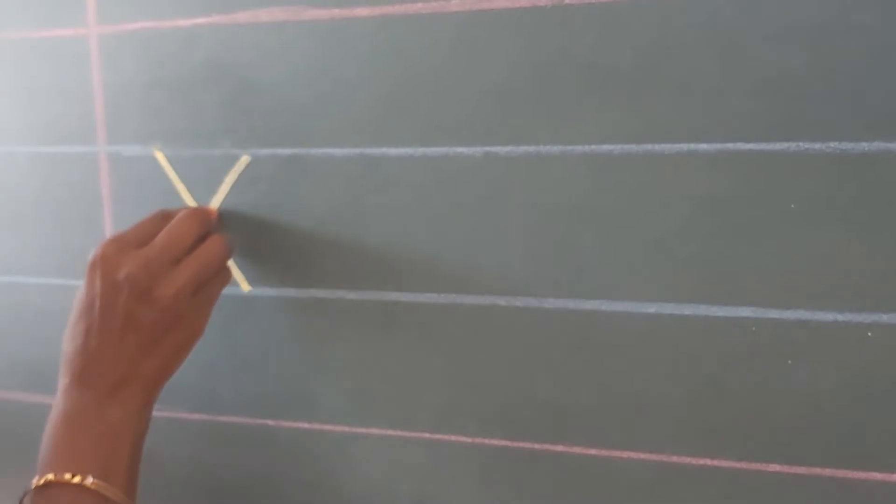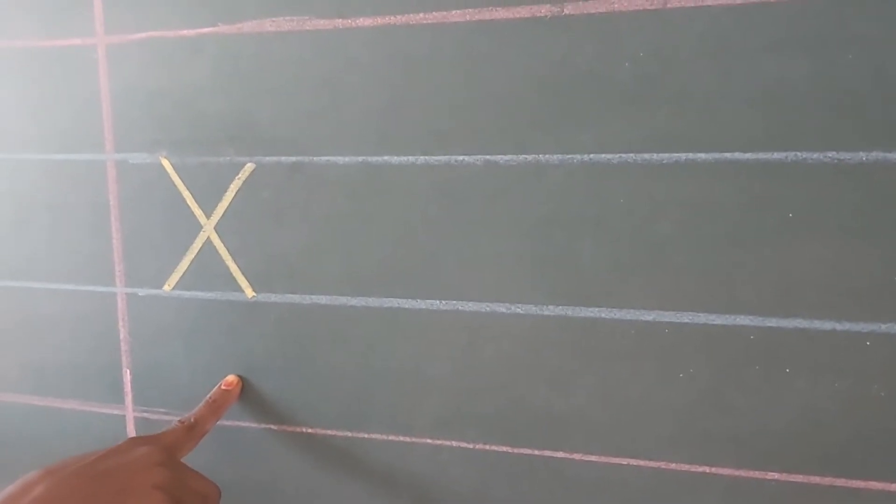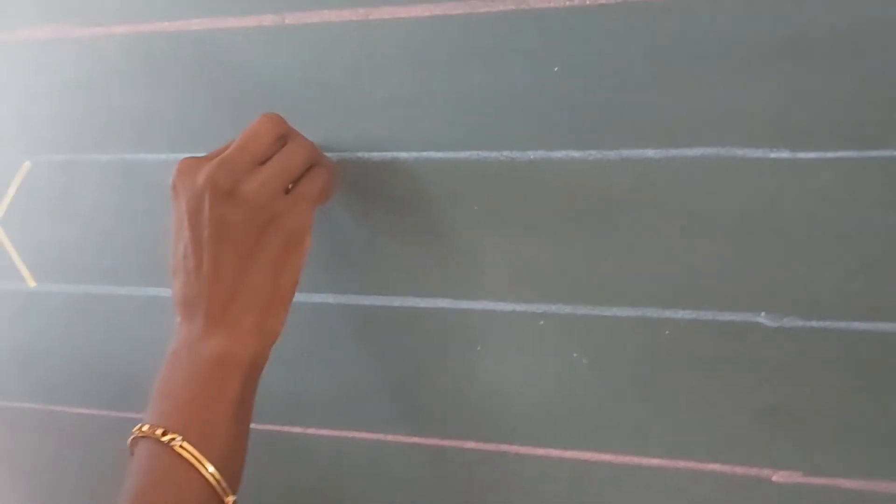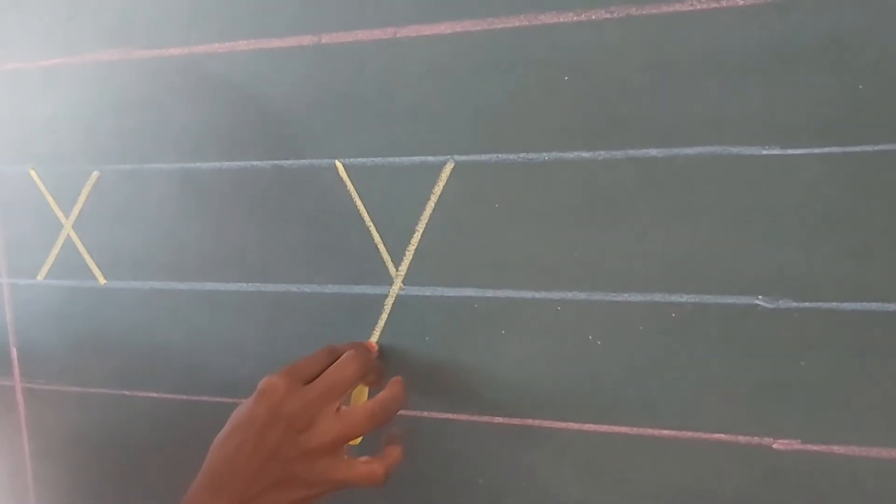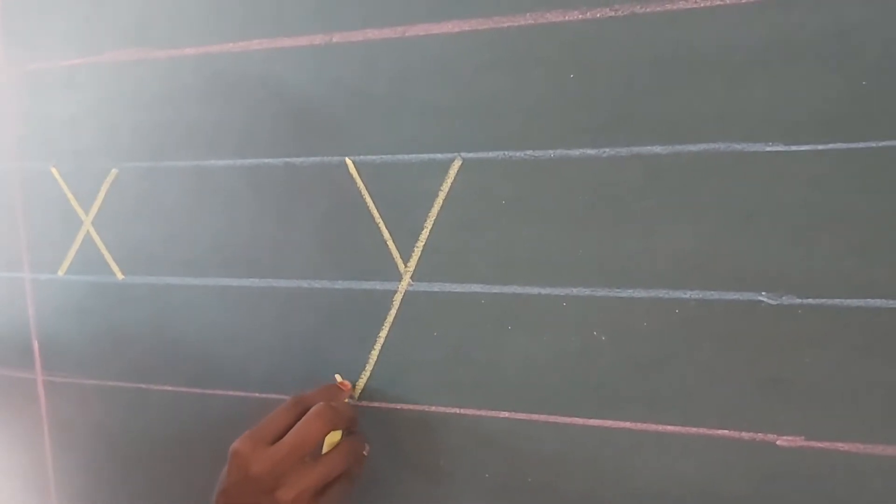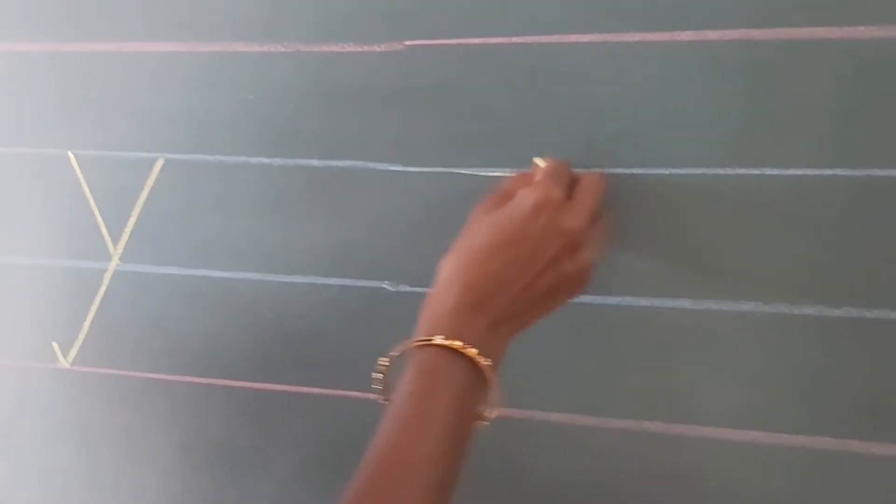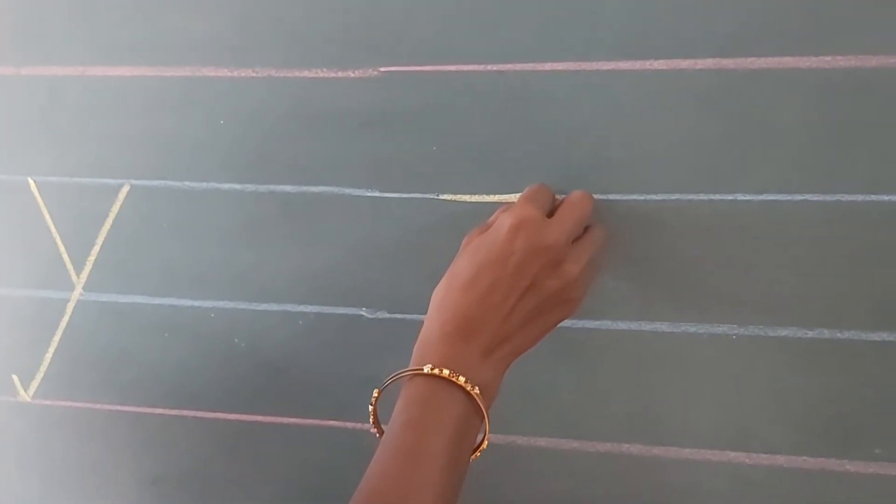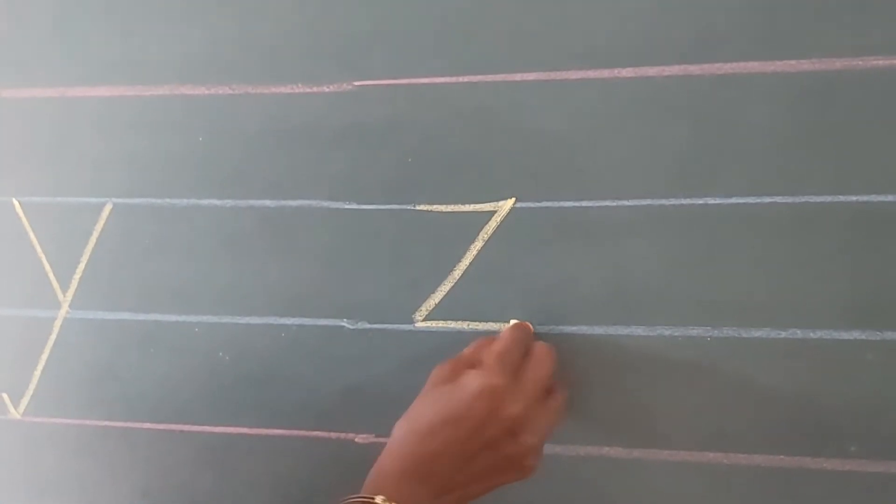Next one is X. This is letter X. Y. See, one small slanting line and one big slanting line, you should touch the red line and a small slanting line. Okay? Y. Next one is Z. Sleeping line, slanting line and sleeping line.